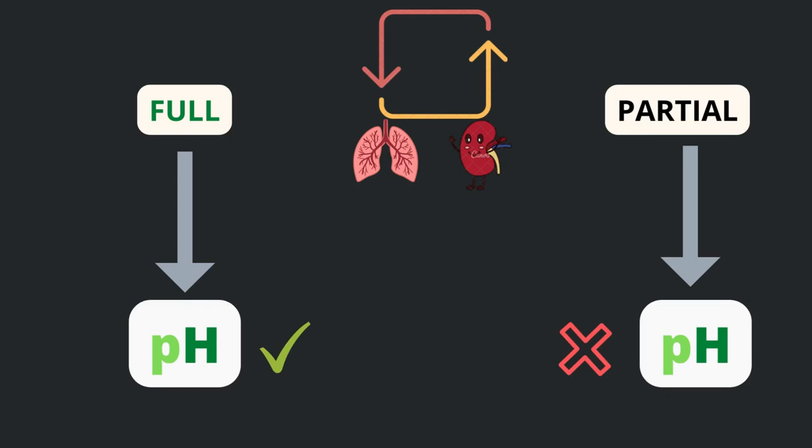Compensation can be either full or partial. In case of respiratory acidosis, if bicarbonate reabsorbed by the kidney is enough to bring back pH to normal, it's called fully compensated respiratory acidosis. If the body fails to bring back pH to normal, it's called partially compensated.